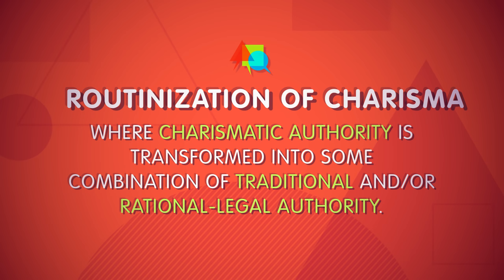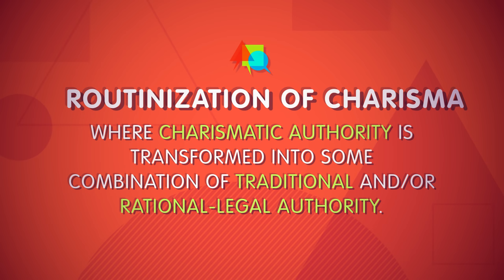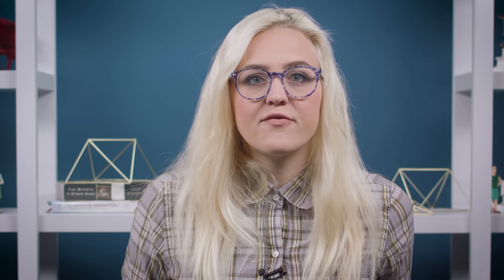So sometimes that power becomes transferred to something outside, separate from, that one charismatic person. This is called the routinization of charisma, and it's where charismatic authority is transformed into some combination of traditional and/or rational legal authority. The founding of the Church after Jesus' death is a good example of this.